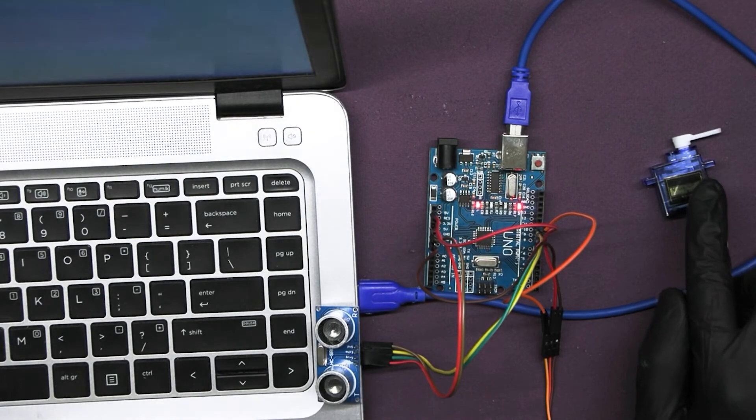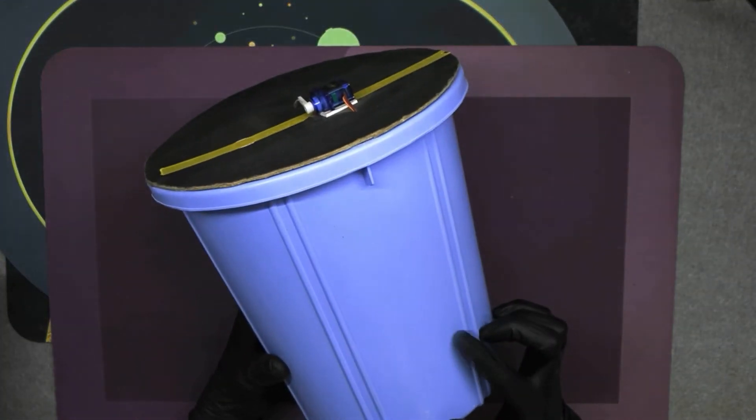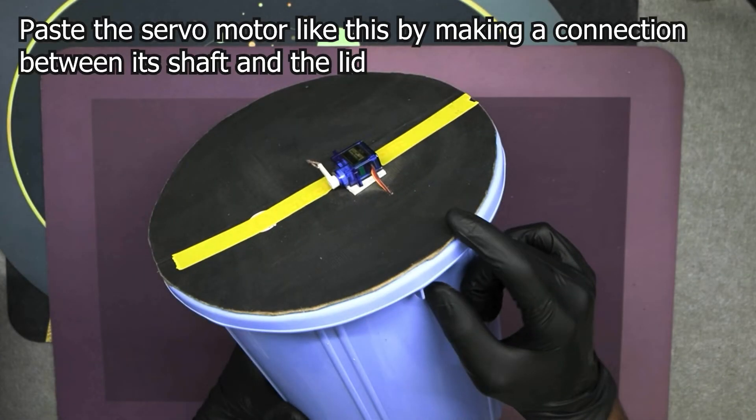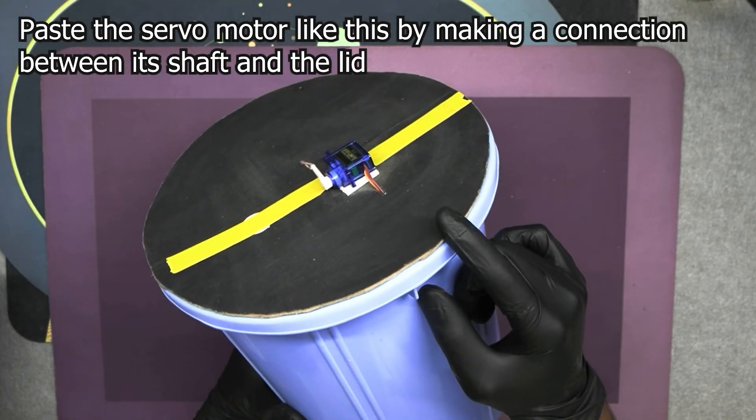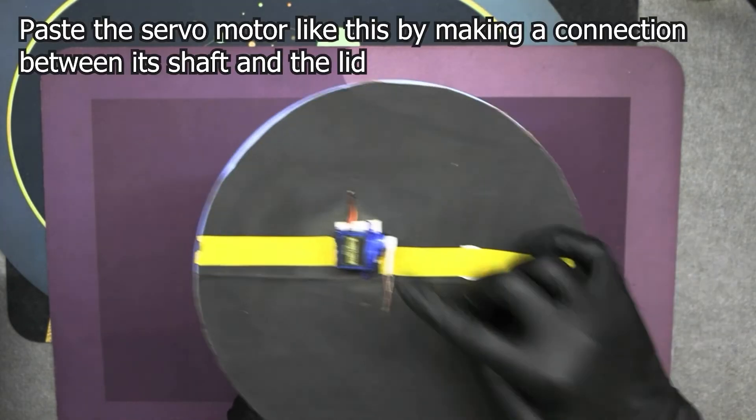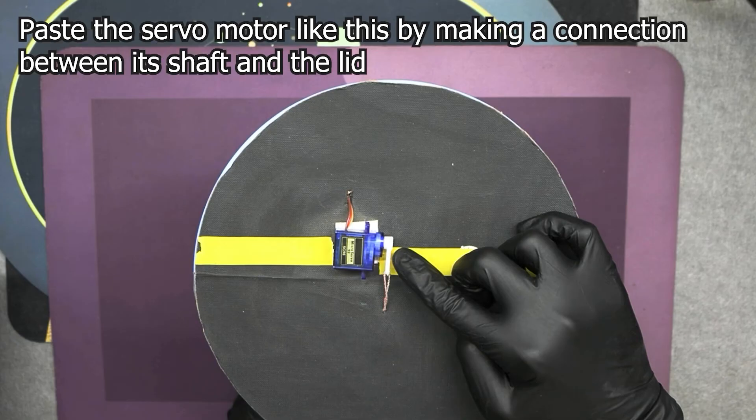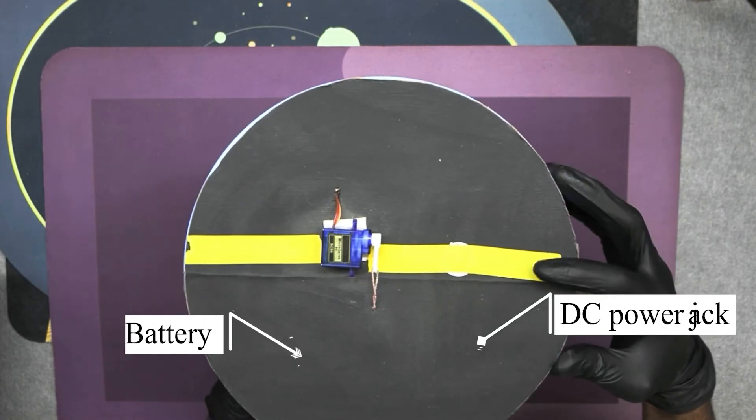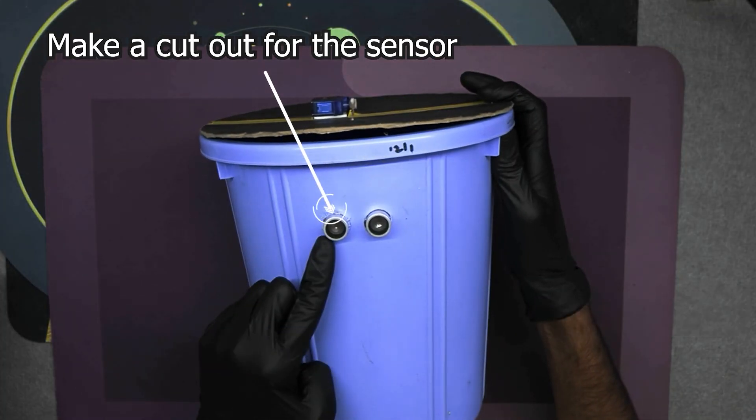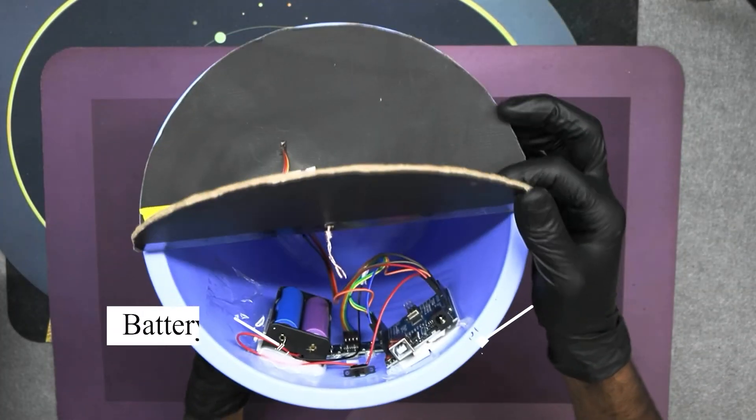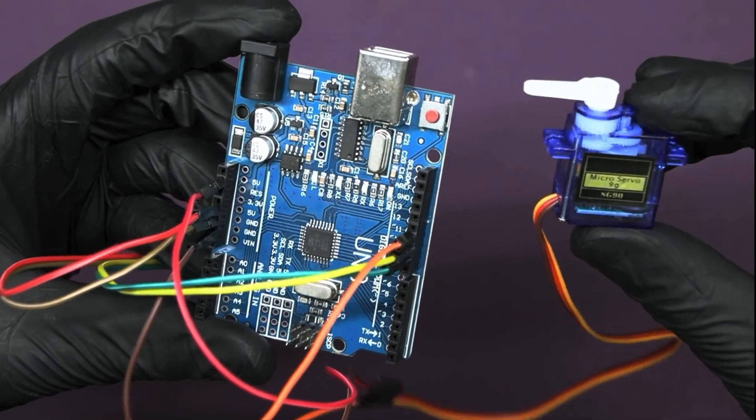Now take a dustbin and a lid of cardboard or any suitable material you want, and then install the circuit as shown. And power the Arduino by using your battery pack via DC power jack.